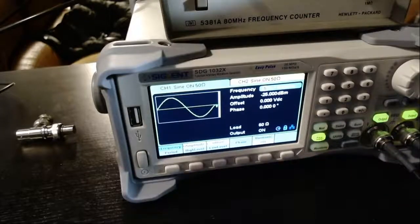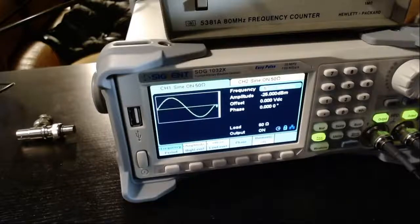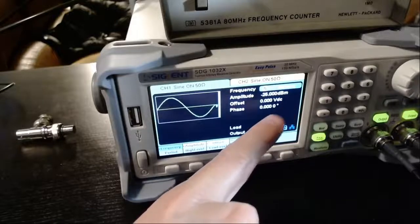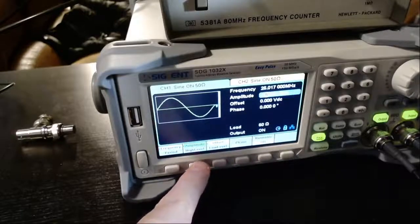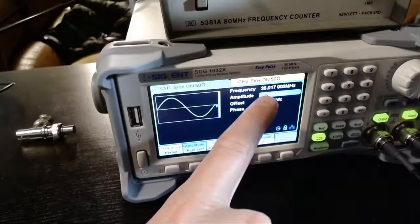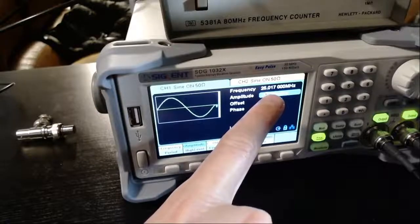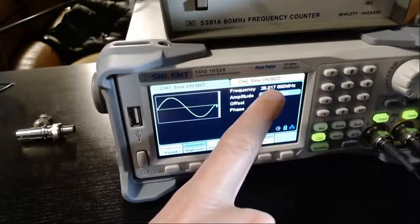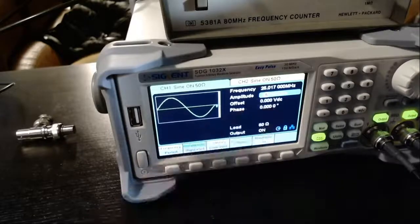Instead, channel one is a minus 25 dBm signal, which is not so strong, it's pretty weak, at 25.017 megahertz. So 25 megahertz and 17 kilohertz.